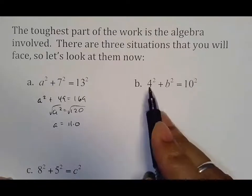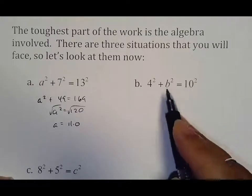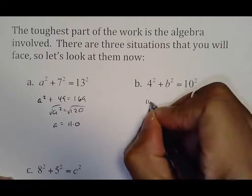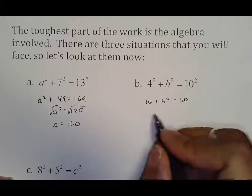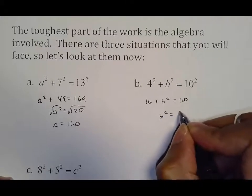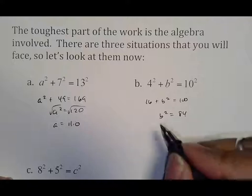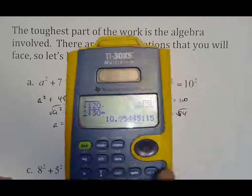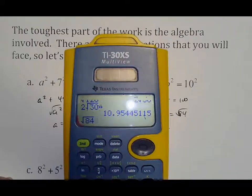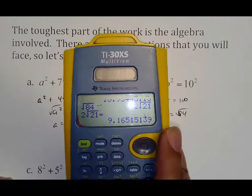So if you had 4 squared plus B squared equals 10 squared. Again, you square everything you have. So it would be 16 plus B squared equals 100. You then move your 16. So B squared equals 84. I just subtract the 16 from both sides. And then you square root to get rid of the B squared. And you get B equals about 9.2.